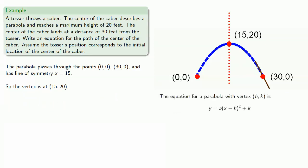Now the equation for a parabola with vertex (h, k) is y = a(x - h)² + k, and we know the vertex. So we know h = 15, k = 20, and so the equation is y = a(x - 15)² + 20.